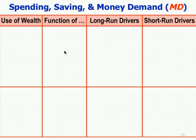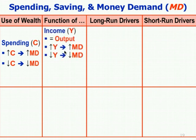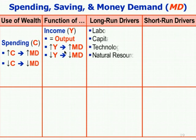For the uses of wealth, there's either spending or savings. Consider spending — it's basically consumption, the consumption component of GDP, consumer spending. The more consumption there is, the greater the money demand; the lower consumption, the lower money demand. What drives consumption? It is a function of income. The more income you have, the more you want to spend, therefore the more goods you want to buy, and therefore the greater your money demand.